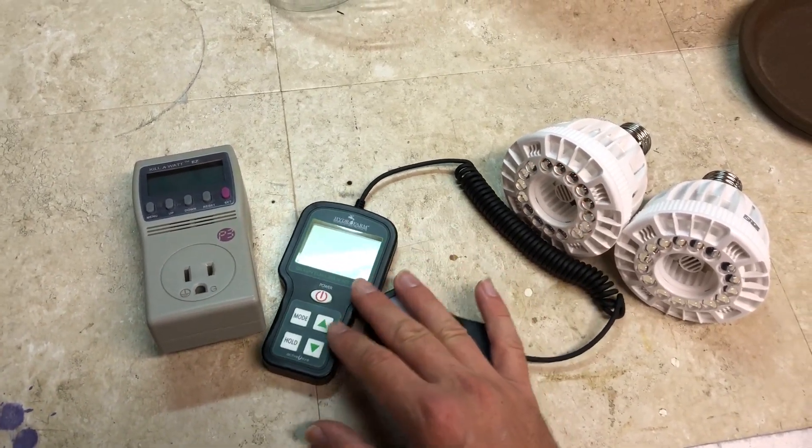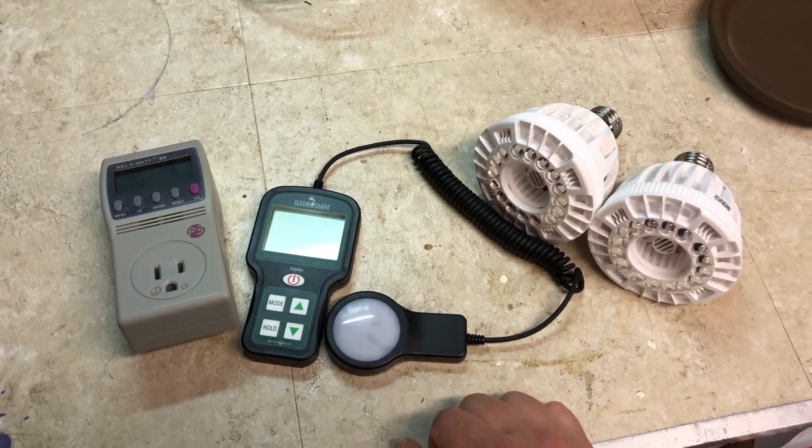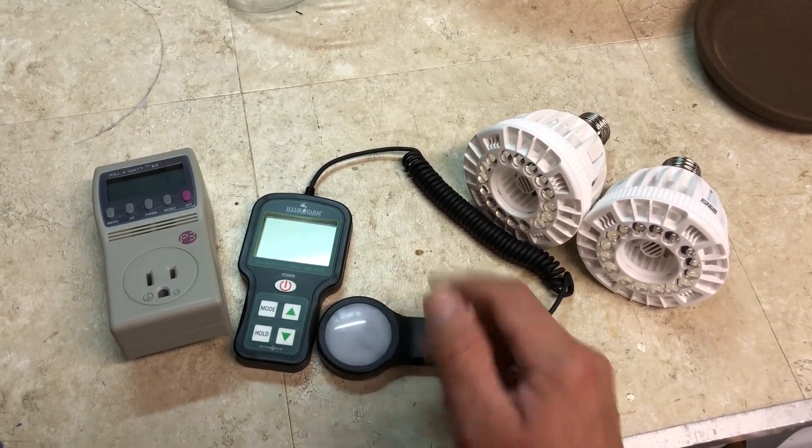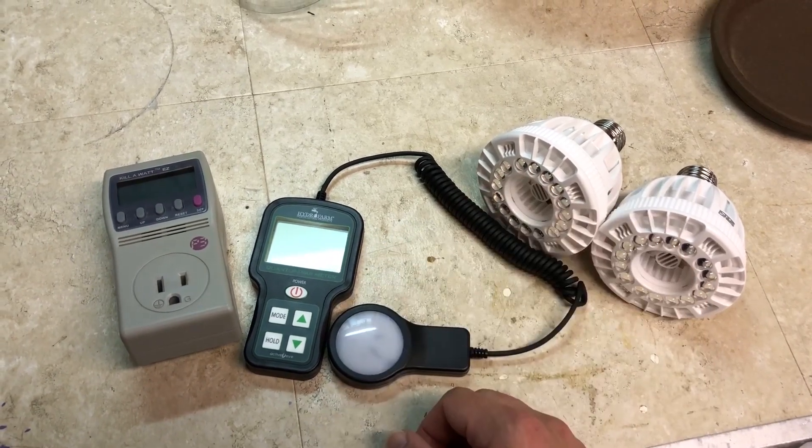If you compare it to something like an Apogee, you're going to spend over $500, and an Apogee, depending on the model you get, is going to be tuned for LED grow lights, and more specifically, the red-blue LED grow lights.